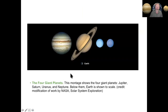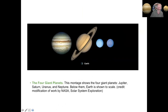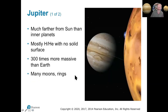Then we have our outer planets: Jupiter, Saturn, Uranus, and Neptune. We sometimes divide these into gas giants and ice giants, but we can also just call all four of them gas giants — they're all made of gas. They're not solid on the surface the way the Earth and the other terrestrial planets are.